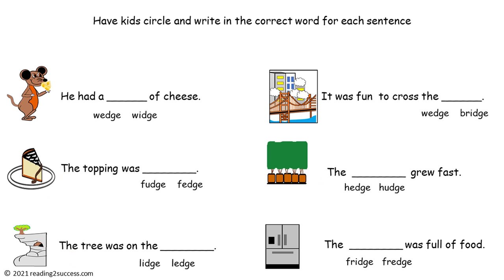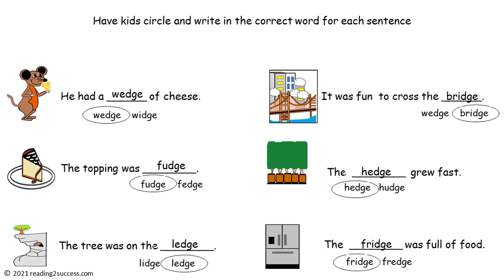Now we're going to have kids circle the word with the correct spelling and write it on the line to complete the sentence. He had a wedge of cheese. The topping was fudge. The tree was on the ledge. It was fun to cross the bridge. The hedge grew fast. And the last one — the fridge was full of food. This is a completed example.